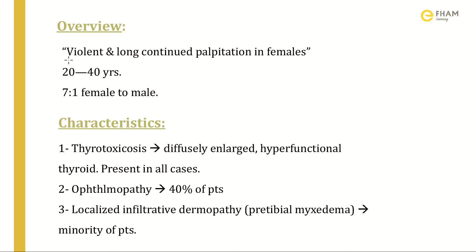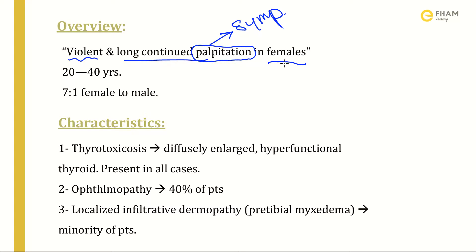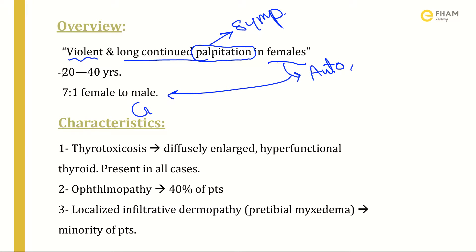The first Graves, who discovered Graves' disease, described it as violent and long-continent palpitation in females — symptoms of sympathetic activation. This tells you that this disease predominantly affects females. It is an autoimmune disease, and most autoimmune diseases affect females more than males, with a ratio of 7 to 1 female to male. It also commonly presents between 20 to 40 years of age.